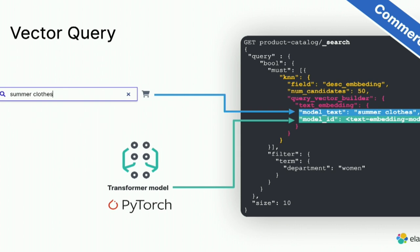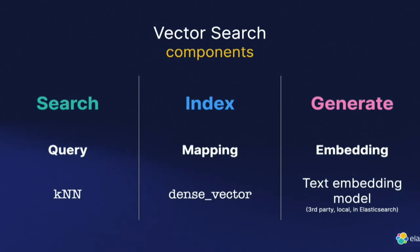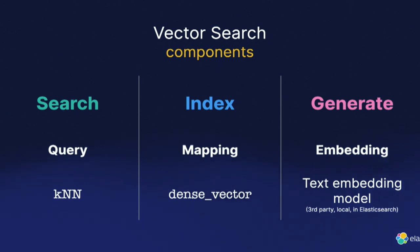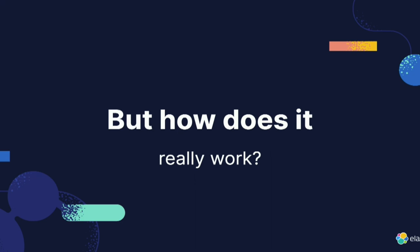With the commercial license, instead of doing the transformation yourself, you can use the ML node: provide the text and we do the inference at search time. To do a good vector search you need three components: the kNN query, a dense_vector field type in your mapping, and a way to generate embeddings — either through third-party services like OpenAI, locally, or within Elasticsearch itself with the commercial license.